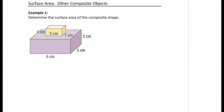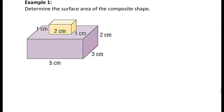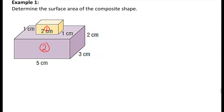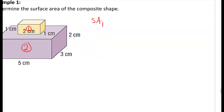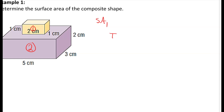We're going to look at a different way of solving this. In the last problem we used the formula; in this one we're going to calculate it by its individual faces. If I call this one and this two, I'm going to find the surface area of shape one. I'll start with the top and the bottom, which is going to be a rectangle.